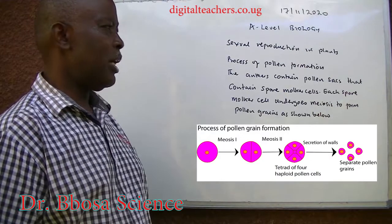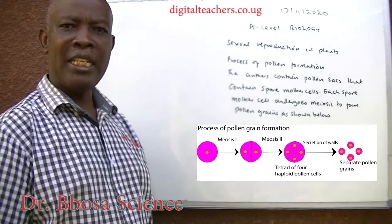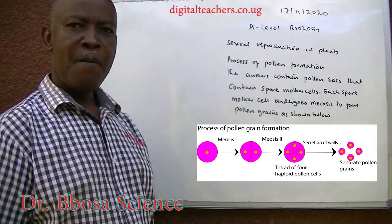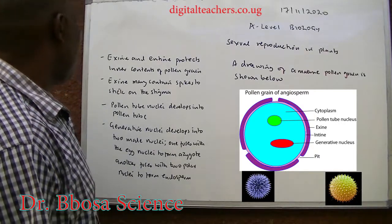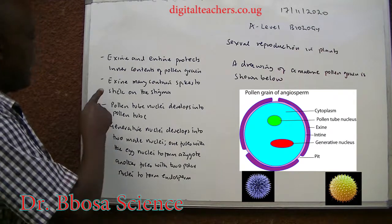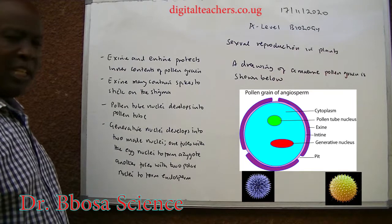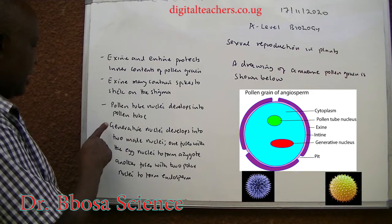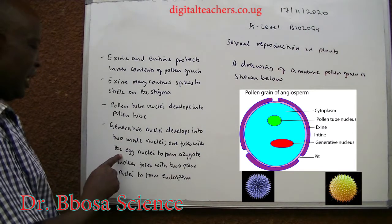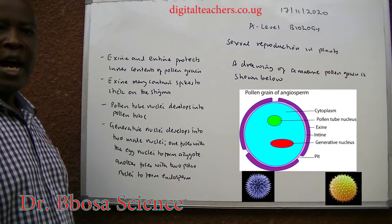Process of pollen grain formation: the anthers contain pollen sacs that contain spore mother cells. Each spore mother cell undergoes meiosis to produce pollen grains, as shown below. Exine and intine protect the inner contents of the pollen grain. Exine may contain spikes to stick on the stigma. The pollen tube nucleus develops into a pollen tube. The generative nucleus develops into two male nuclei. One fuses with the egg nucleus to form a zygote. Another fuses with two polar nuclei to form an endosperm.